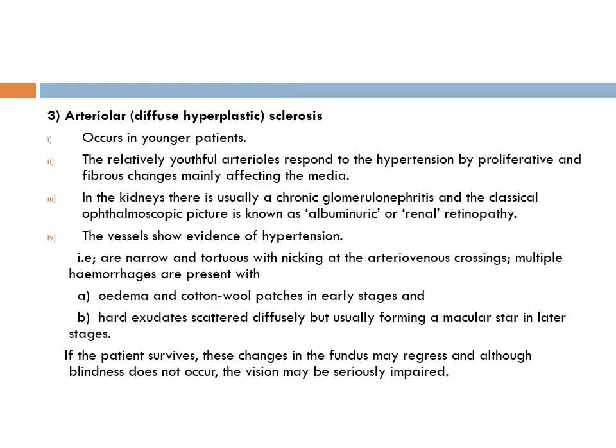In addition, there is edema — and edema is a sign of worse prognosis. This contrasts with the previous age group where edema was lacking; they had hemorrhages and exudates but not edema. Edema signifies breakdown of the blood-retinal barrier. Cotton wool spots are indicative of ischemia. Both these signs — edema and cotton wool spots — indicate poor prognosis. Hard exudates are scattered diffusely but usually form a macular star in the later stage.